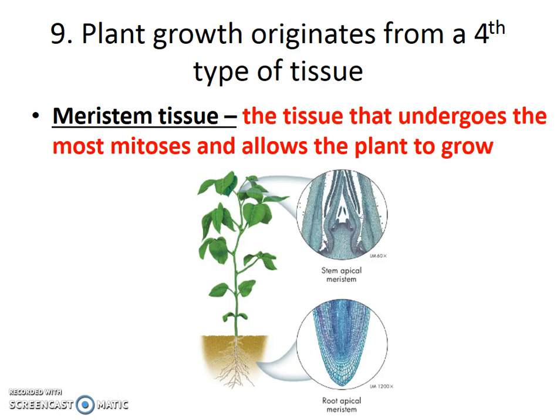Meristem tissue is the last type of tissue. All meristem tissue is found in the tips of plants and the tips of roots, and it helps plants grow. Plants usually grow up or down into the soil, and meristem tissue is the growth tissue that allows them to do that.